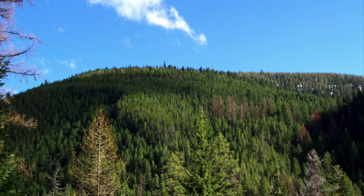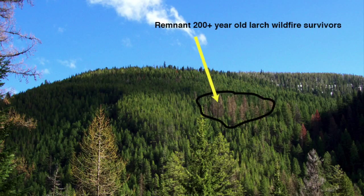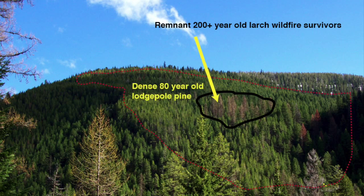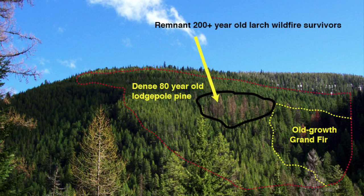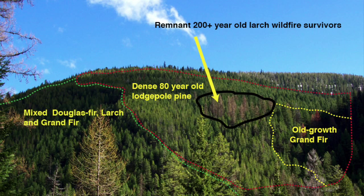If we look at a mountainside and define the different tree species, their ages, and their distribution, we can reconstruct the past history of disturbance. In the center in the black circle, we have a remnant stand of old larch trees that survived a massive wildfire — these larches are 200-plus years old and, being the most fire-resistant, survived. What came in around them is a dense lodgepole pine stand only 80 years old. In the drainage bottom, where it's cooler and wetter, grand fir survived the past fire; on the northeast side of the mountain, cooler temperatures and more moisture allowed Douglas fir, larch, and grand fir to establish.